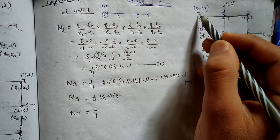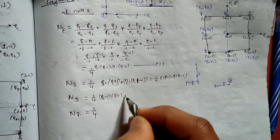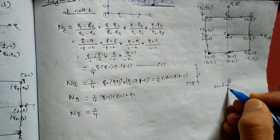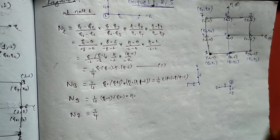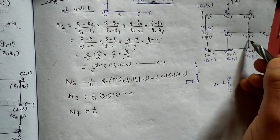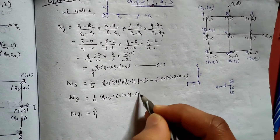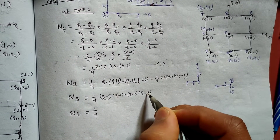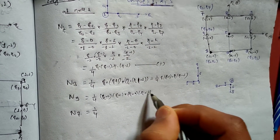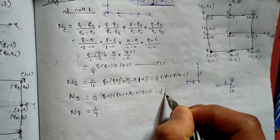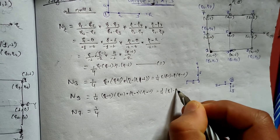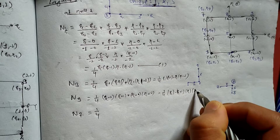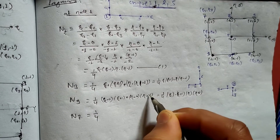For node 3: zeta plus 1, into eta plus 1. Eta 3 is minus one, so eta minus minus one equals plus one. Therefore N3 = 1/4 · zeta · (zeta + 1) · eta · (eta + 1).